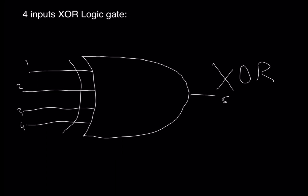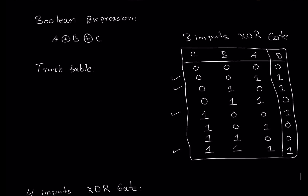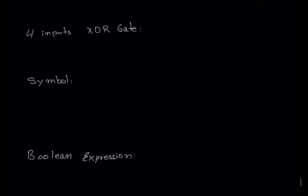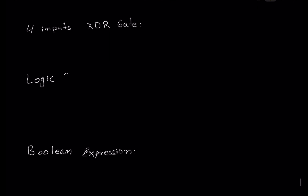We're talking about a four-input XOR gate, which means we have four inputs coming into the XOR gate. We previously talked about two-input and three-input XOR gates. Now we will be talking about the four-input XOR gate where the output will be determined by the state of these four inputs. The logic symbol is the same thing but with four inputs.